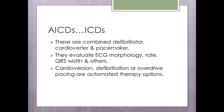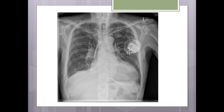Overdrive pacing works as follows: if a patient is in VT at 180 bpm, the pacemaker increases its pacing rate — for example to 250 bpm. Once capture is achieved, the re-entry focus generating the VT fires during the absolute refractory period of the pacemaker, effectively cutting the re-entry circuit. The pacemaker then gradually decreases its rate back to normal. This avoids delivering shocks — which are painful — and improves battery longevity.